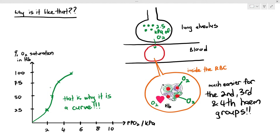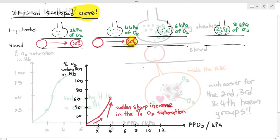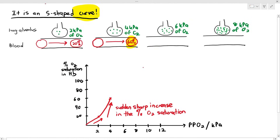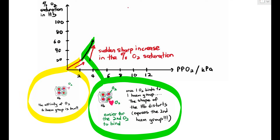To summarize: a small increase in partial pressure of oxygen causes a large increase in percentage oxygen saturation. The reason is that when oxygen binds to the first heme group, it distorts the hemoglobin, exposing the second heme group, which then has a higher affinity for oxygen, making it easier to bind. That's all you need to know for the exam.